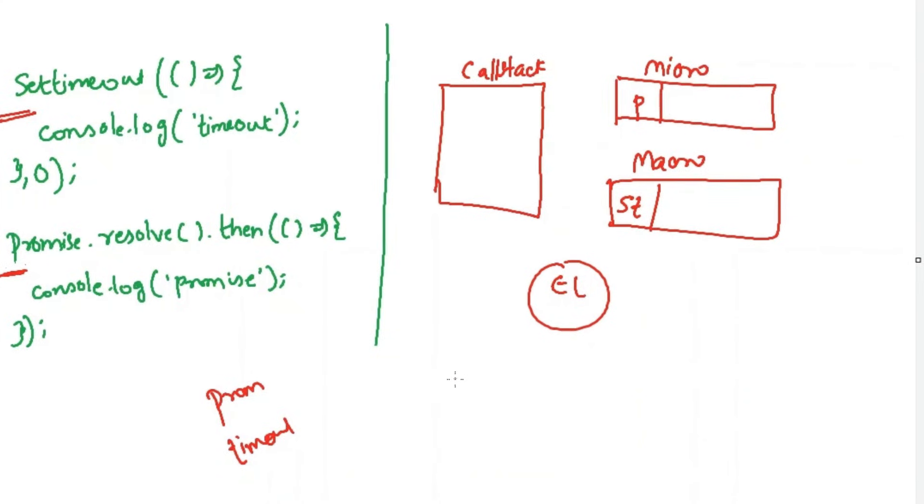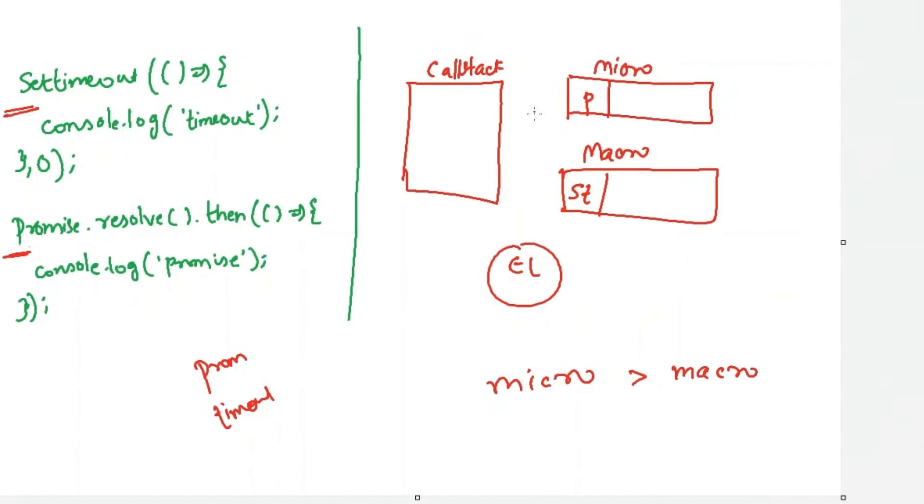Now it will push this into the micro task and macro task, but which one will have more priority? Here, micro task queue will have more priority than macro task queue.